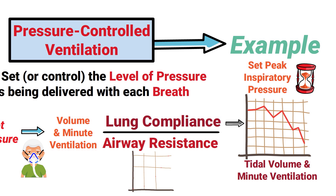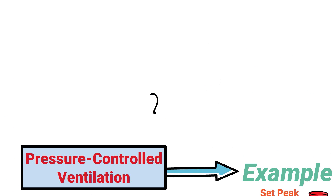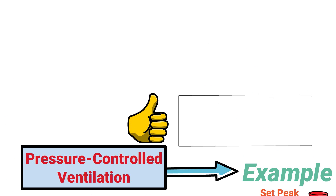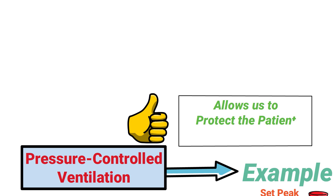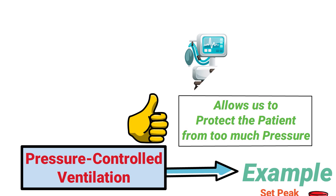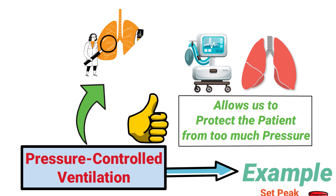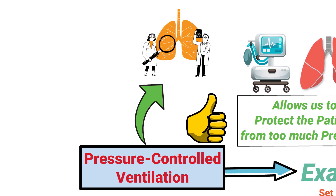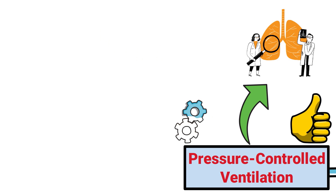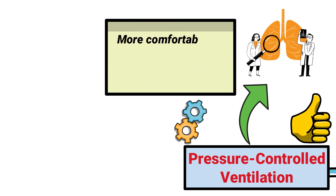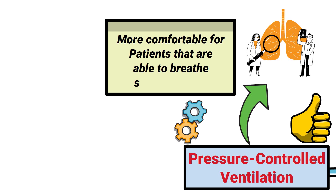The same would apply if airway resistance were to increase. With that said, one of the primary advantages of pressure controlled ventilation is that it allows us to protect the patient from too much pressure, which reduces the likelihood of ventilator-induced lung injury. This is why pressure controlled ventilation is often considered to be a lung protective strategy. Also, pressure control modes are generally more comfortable for patients that are able to breathe spontaneously.